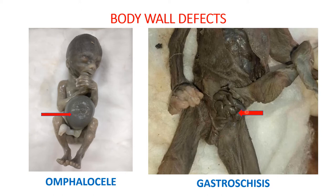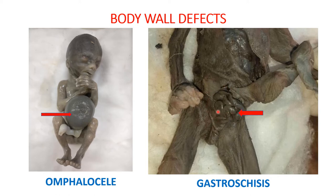The second picture shows another type of body wall defect called gastroschisis. Both pictures are from fetal autopsy cases. In the omphalocele picture, the herniated contents are covered by certain layers, which we'll discuss. In the second picture we can observe loops of intestine herniating out — this condition is gastroschisis. We'll now see how to differentiate between both body wall defects.